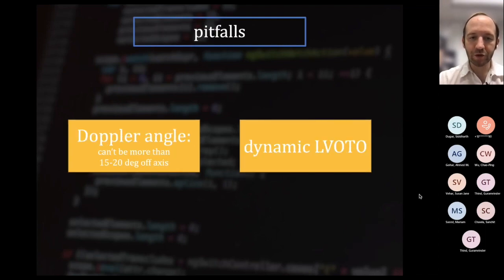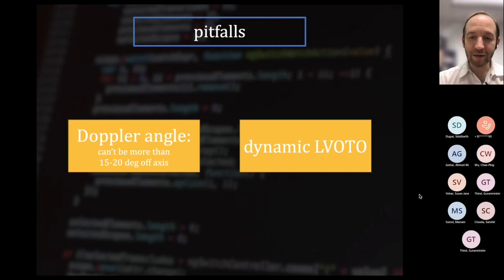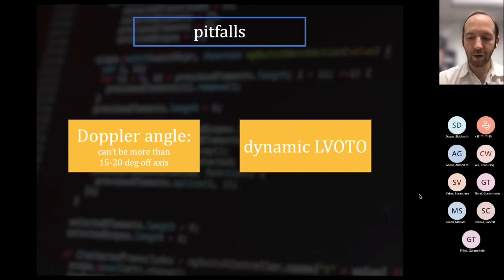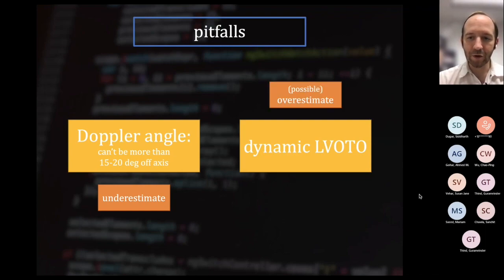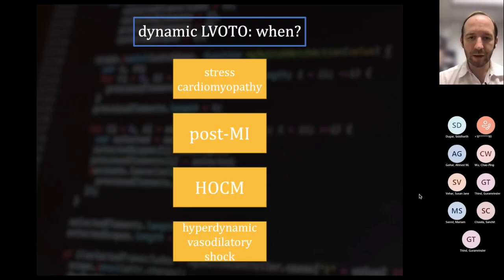A couple of pitfalls to be aware of when measuring the LVOT VTI. First, as with any pulse wave or continuous wave Doppler measurement, if your angle is off more than 15 to 20 degrees from the main axis of flow, you're going to underestimate the LVOT VTI. Second, if there is LVOT obstruction — which you may not necessarily detect if they don't have obvious asymmetric hypertrophy — that jet will be very pointy with a very high gradient and may be uninterpretable, or potentially make your numbers look higher than they would be.